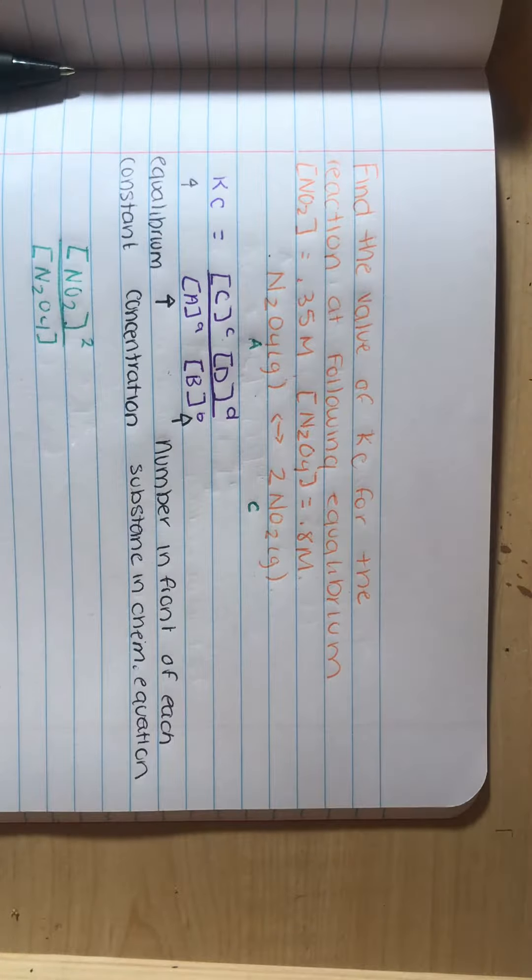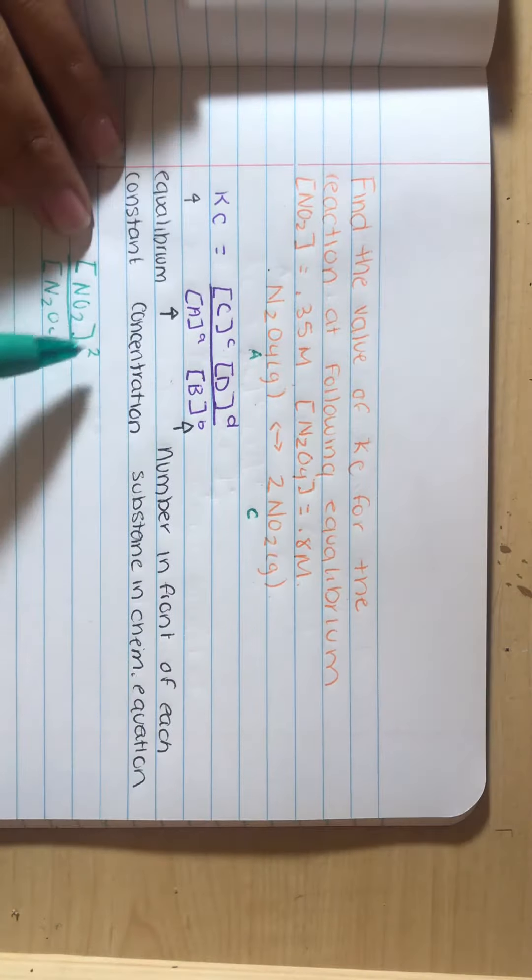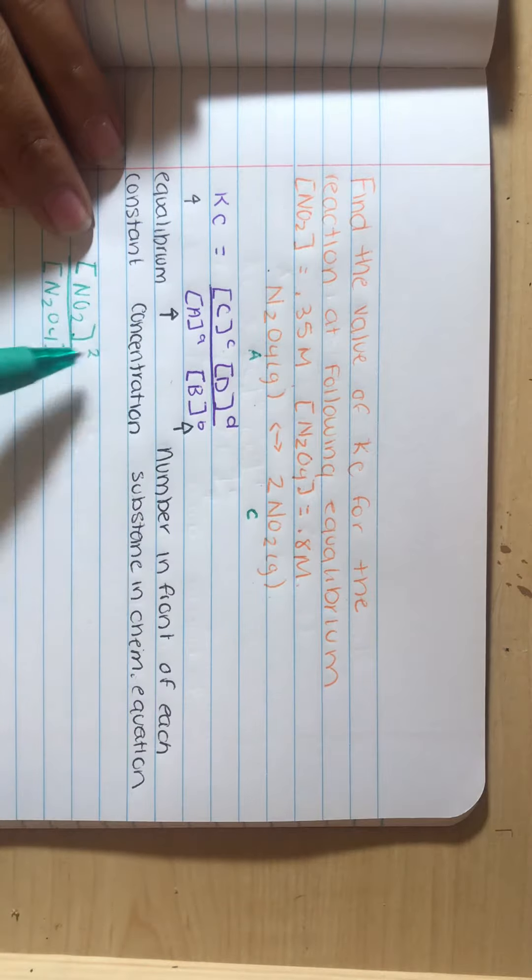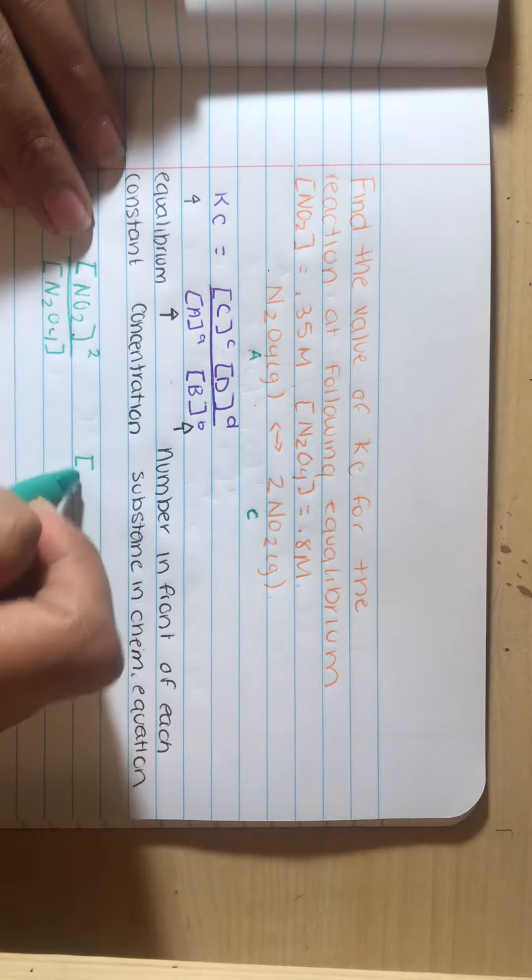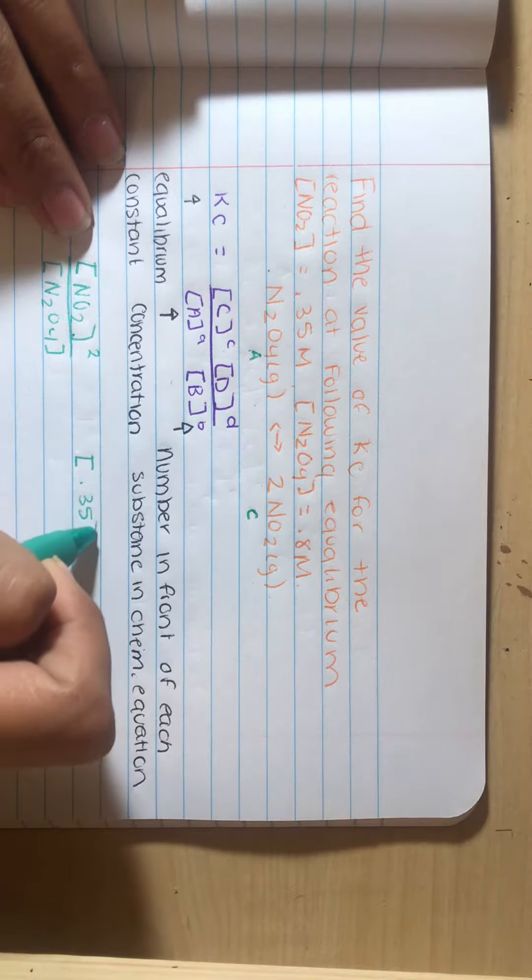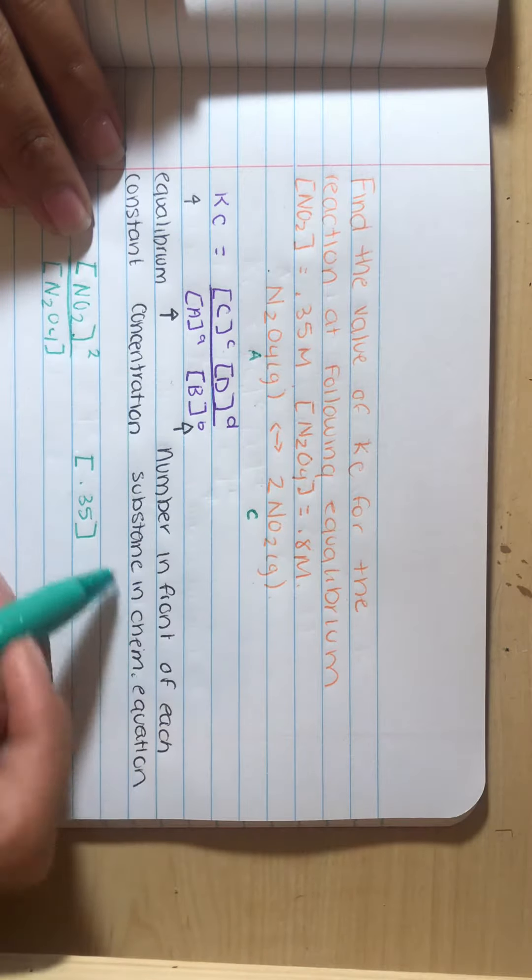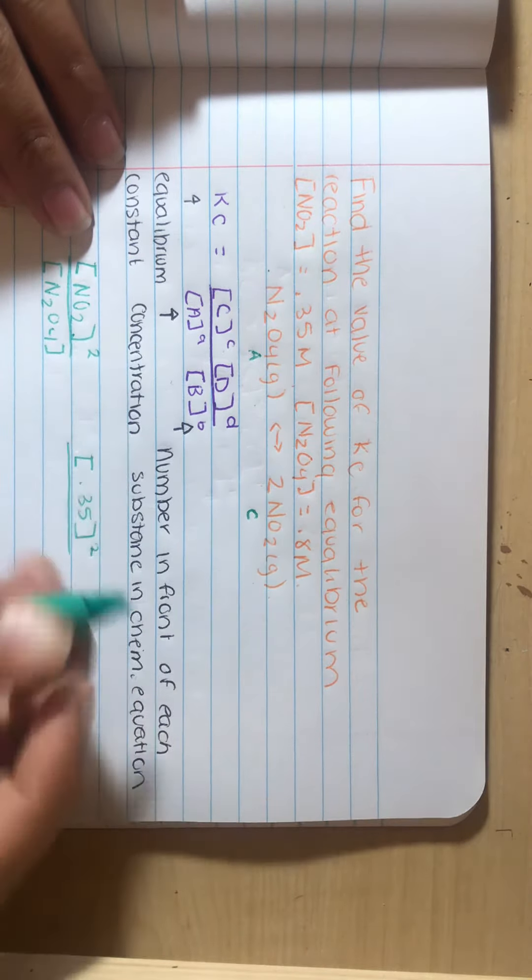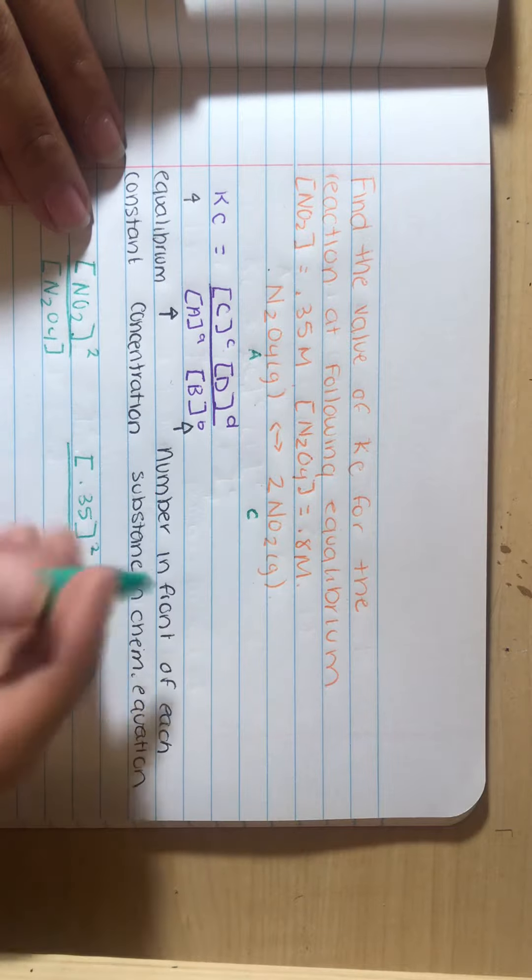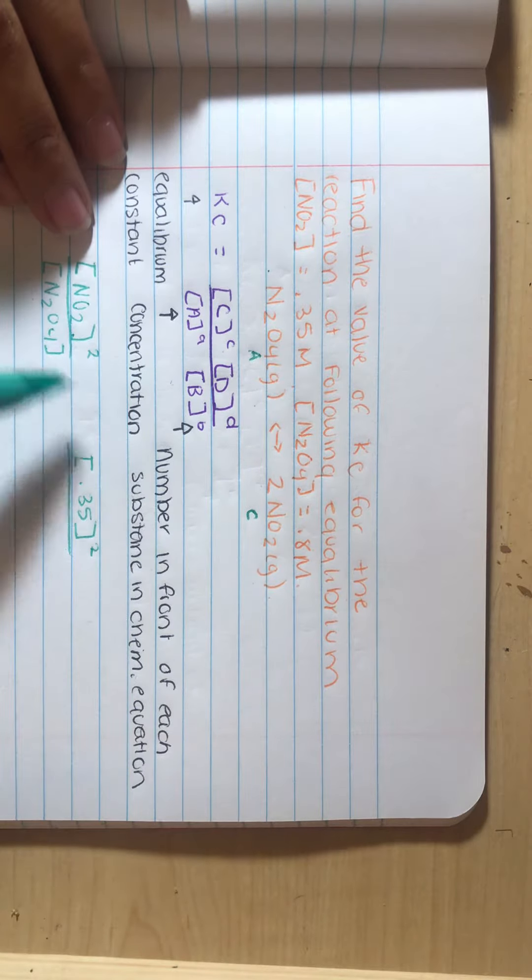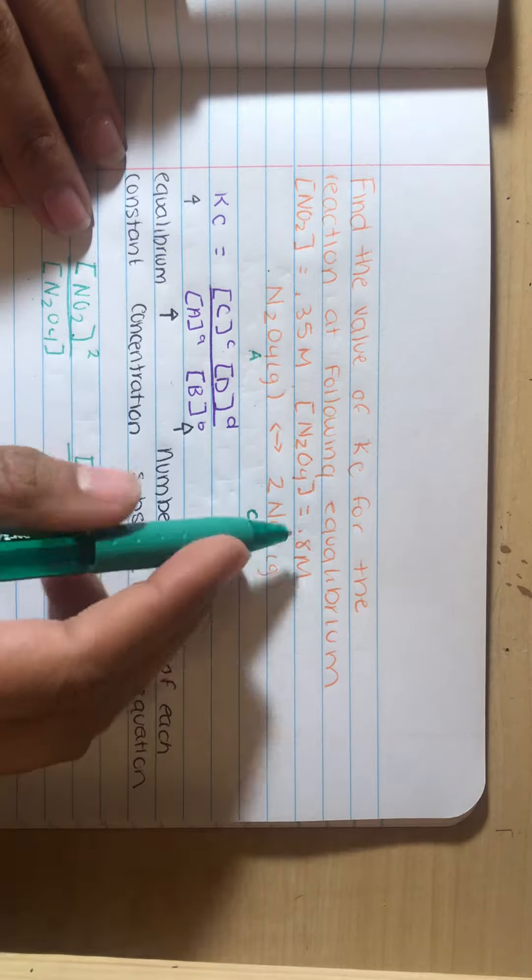So now they do give us a concentration, so we're going to fill those in. The concentration for NO2 is 0.35. We're going to keep that 2 on the top. And then we're going to get the concentration of the N2O4, which is 0.8.